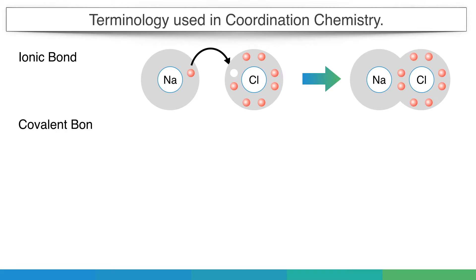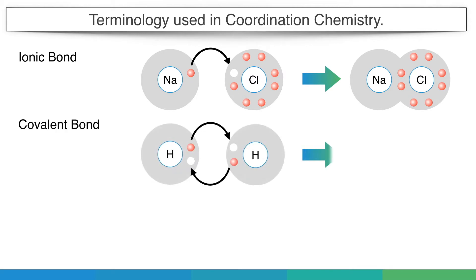While in covalent bonds, two atoms of similar electronegativity share one electron each to form a covalent bond. Like in the case of a hydrogen molecule, both atoms are hydrogen with the same electronegativity. Both have one electron, so after sharing one electron from both atoms, they form a covalent bond.